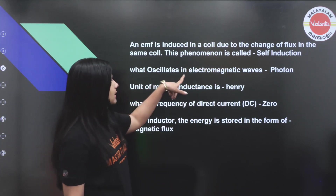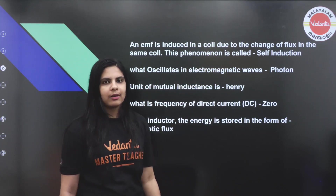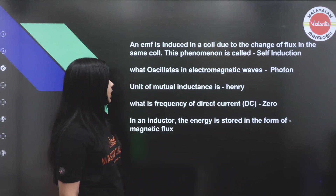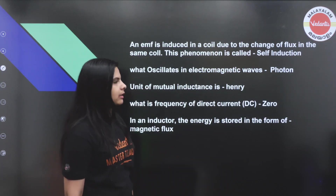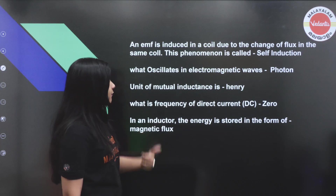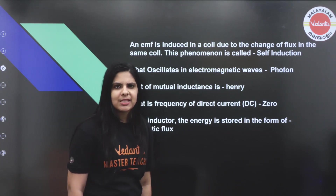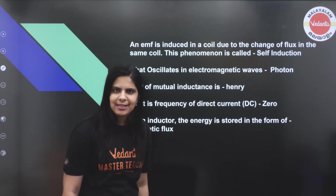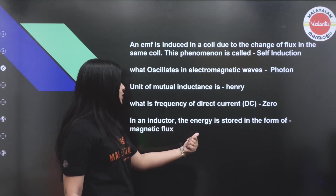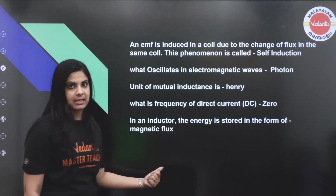In electromagnetic waves, electric and magnetic fields oscillate — electromagnetic waves oscillate in the form of electric and magnetic fields.